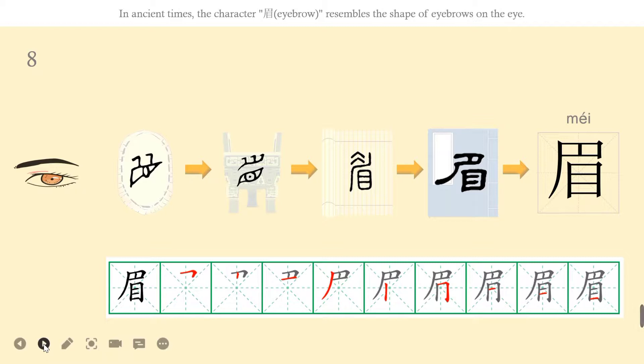Méi is a combined Chinese character. It consists of two parts, so we should write the outer part, then we write the inner part.